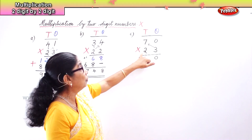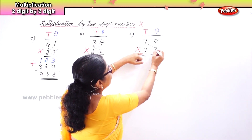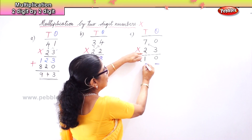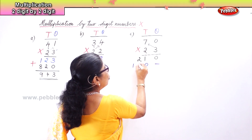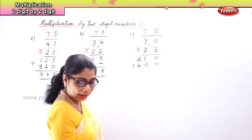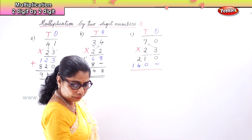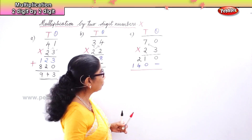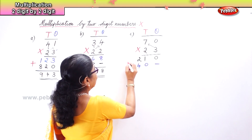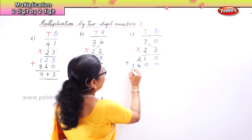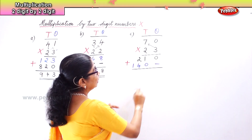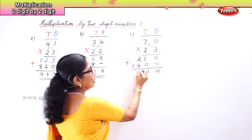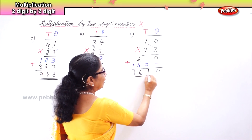Now forget about the 3 and go to the 2 in the tens place. Put a dash, then multiply: two into zero is zero, seven twos are fourteen — write 4 carry 1. Now add the two rows. Bring zero down, one plus zero is one, four plus one is five, and carry the 1. The answer is 1610.